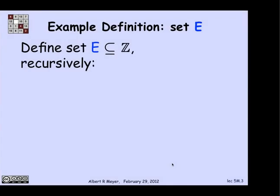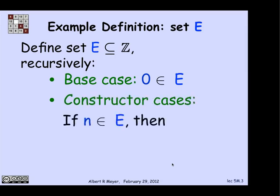Let's look at an example. I'm going to define a set E that's a subset of the integers, and I'm going to give you a recursive definition of E. The base case is that I'm going to tell you that 0 is in E. And I'm going to give you two constructors. The first one says that if you have an n that's in E, you can add 2 to it and get a new element in E, providing that n is non-negative.